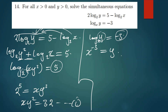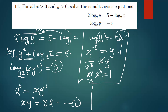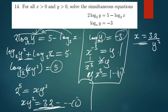We can rewrite this as 1 over x³ being equal to y, which gives us y·x³ being equal to 1. This is equation two. Now I can make x the subject of the formula from equation one: x being equal to 32 over y².